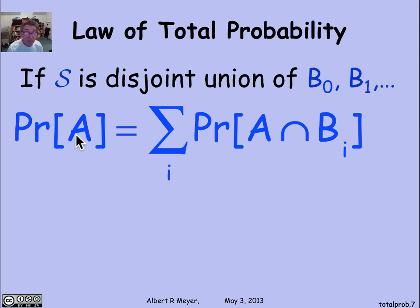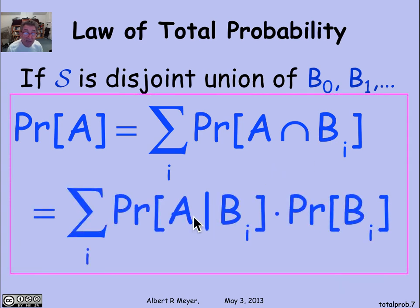then it's still the case that the probability of A is equal by the sum rule to the probability of these disjoint pieces, the parts of A that are in each of the different blocks of the partition. And reformulating that as a conditional probability, I get the rule that the probability of A is the sum over all possible i of the probability of A given Bᵢ times the probability of Bᵢ.